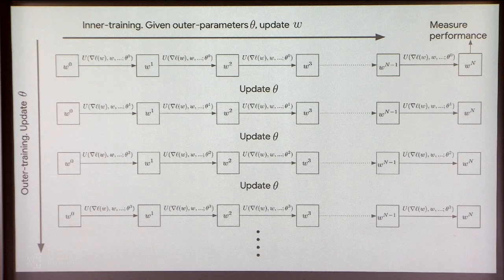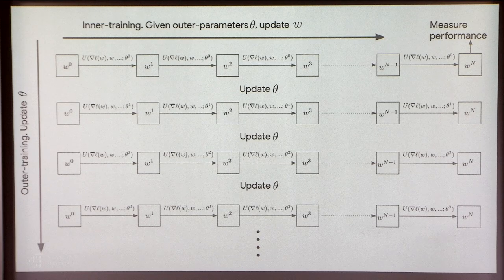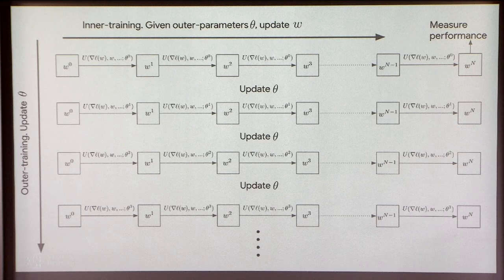The function U will always be fed the gradient and the current parameters, with a catch-all dot-dot-dot. In practice, we're also going to feed it some additional statistics based on the history of gradients. You can feed in almost anything you want. You can also experiment with having some extra state variables that the function inputs, outputs, and passes to the future. The short answer is that the more internal state you give U, the less stable training becomes, because you're building a more complex dynamical system inside every step of your complex dynamical system.